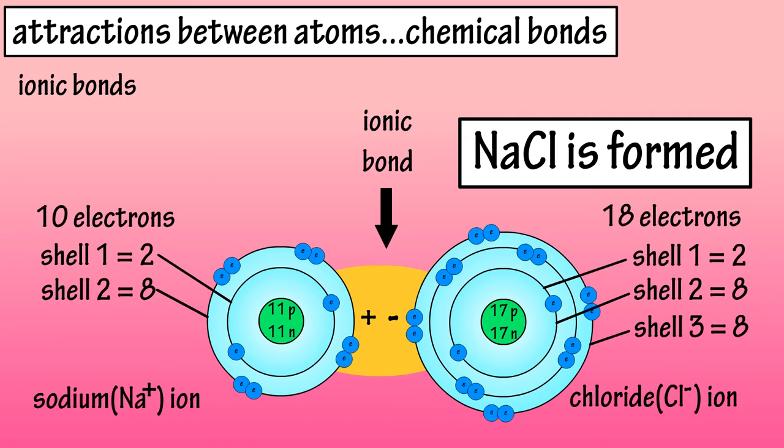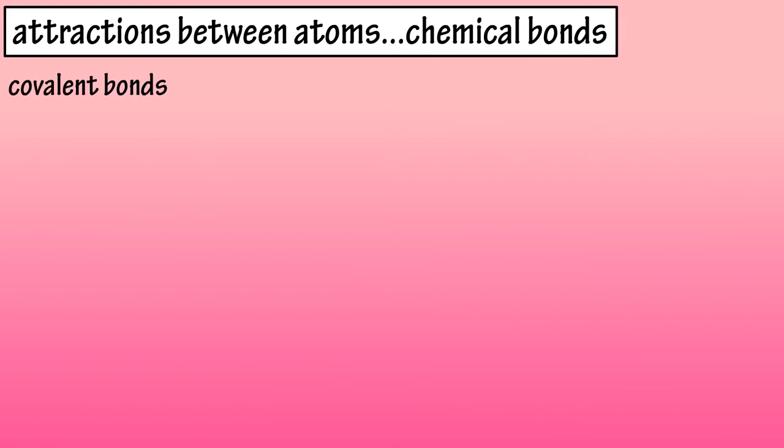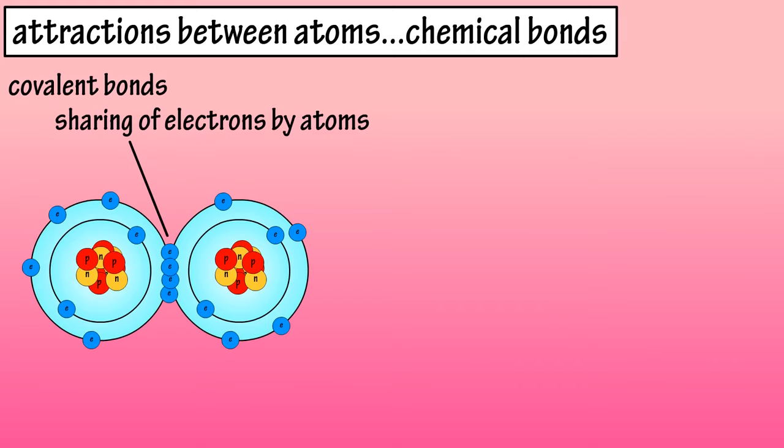So, ionic bonding is when an electron transfer takes place and generates 2 oppositely charged ions. Now for covalent bonds. Covalent bonds are chemical bonds that are formed by the sharing of 1 or more pairs of electrons by the outer energy levels or shells of 2 atoms.